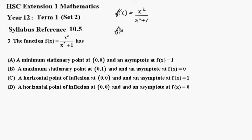Now, I'll rewrite that as x squared plus 1 minus 1 in the numerator, and then I can just split those up, write it as x squared plus 1 over x squared plus 1 minus 1 over x squared plus 1.